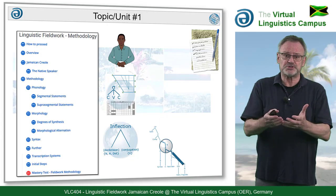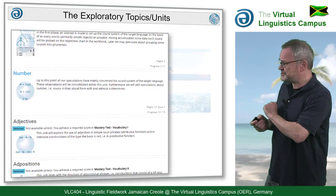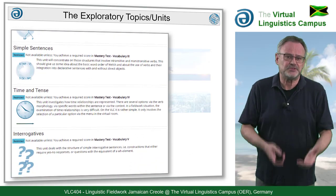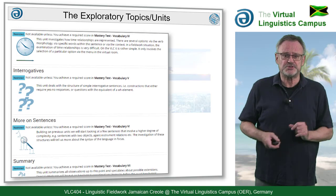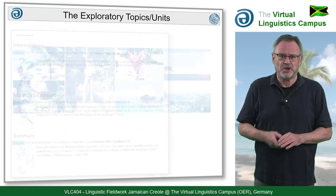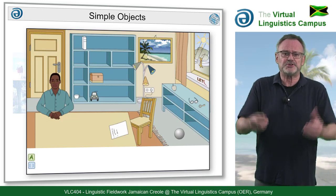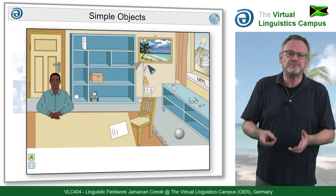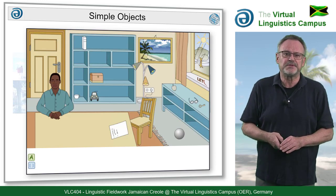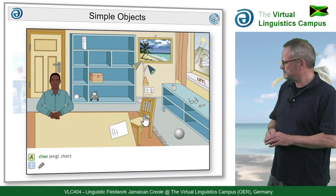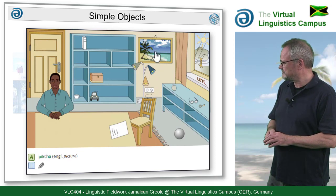The core of the course are the fieldwork units, each with an exploratory part dedicated to a particular topic — the so-called virtual scene. The first of these scenes deals with simple objects. In our virtual interview room, you find the native speaker and a number of clickable objects with their audio and orthographic representation: Box. Chair. Picture. The curtain them.